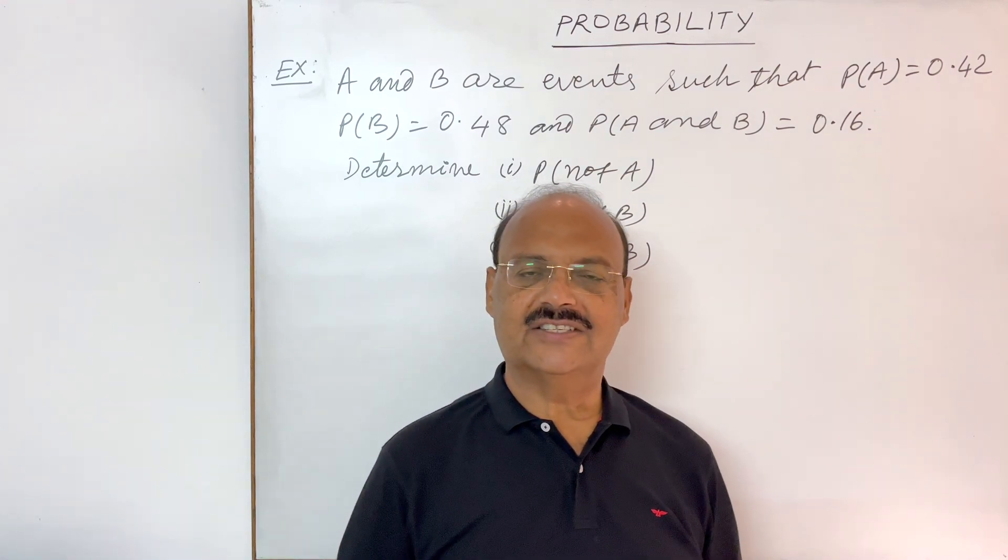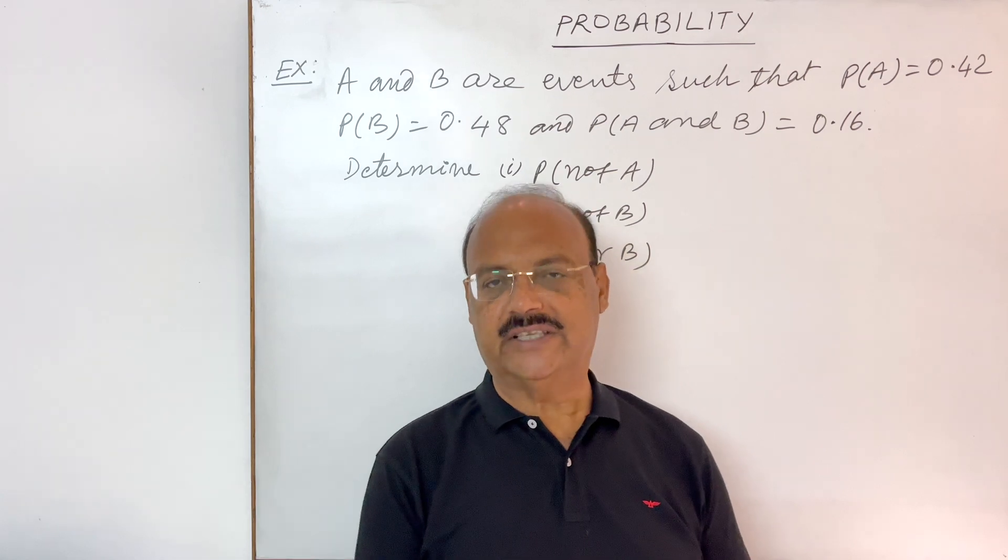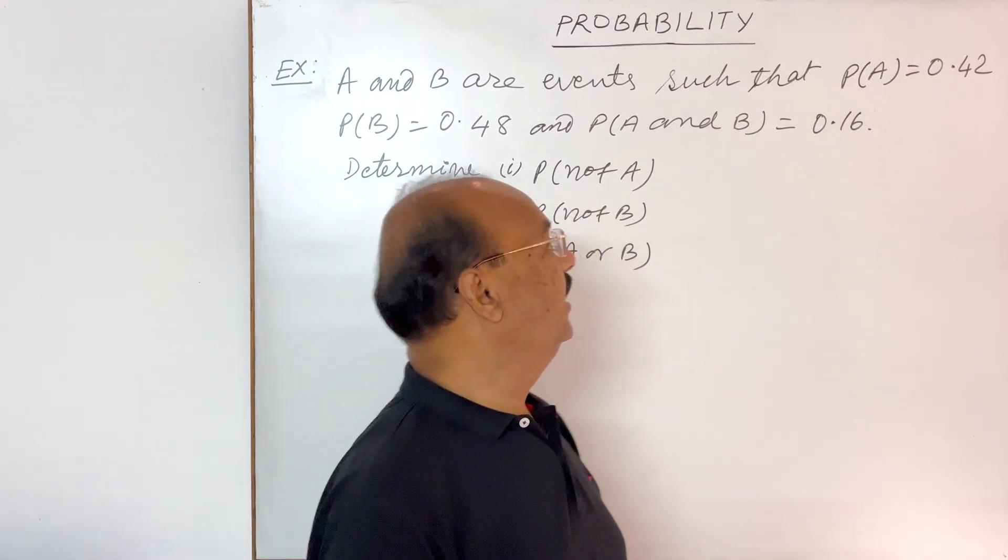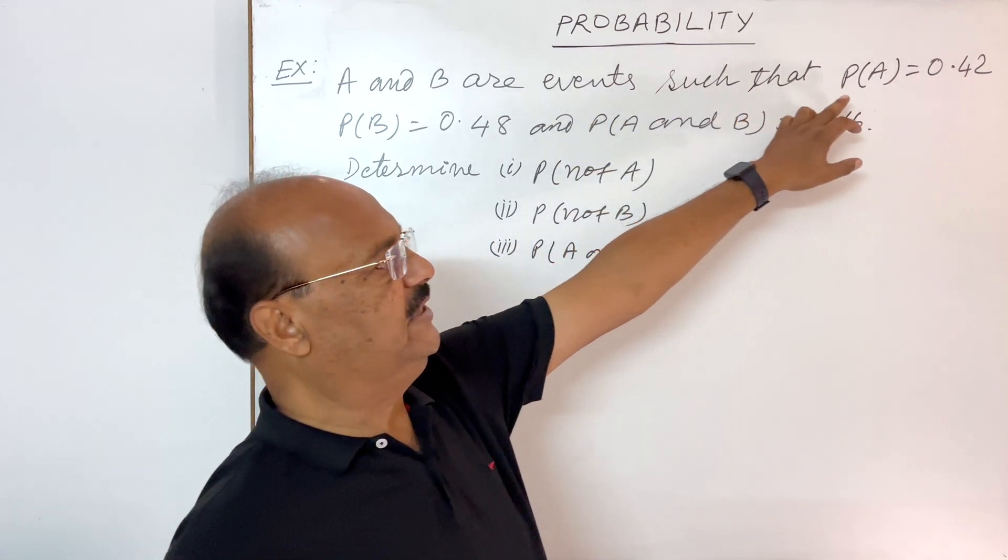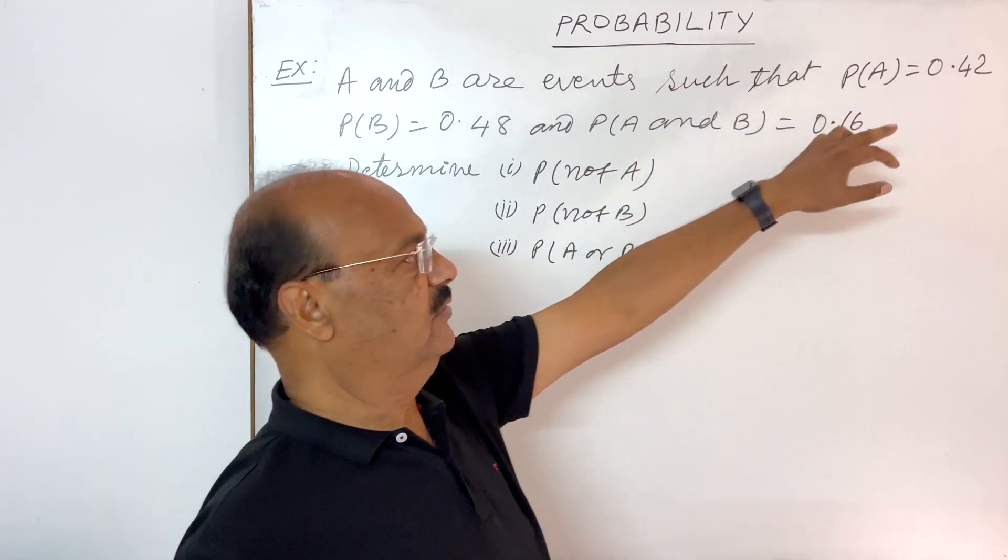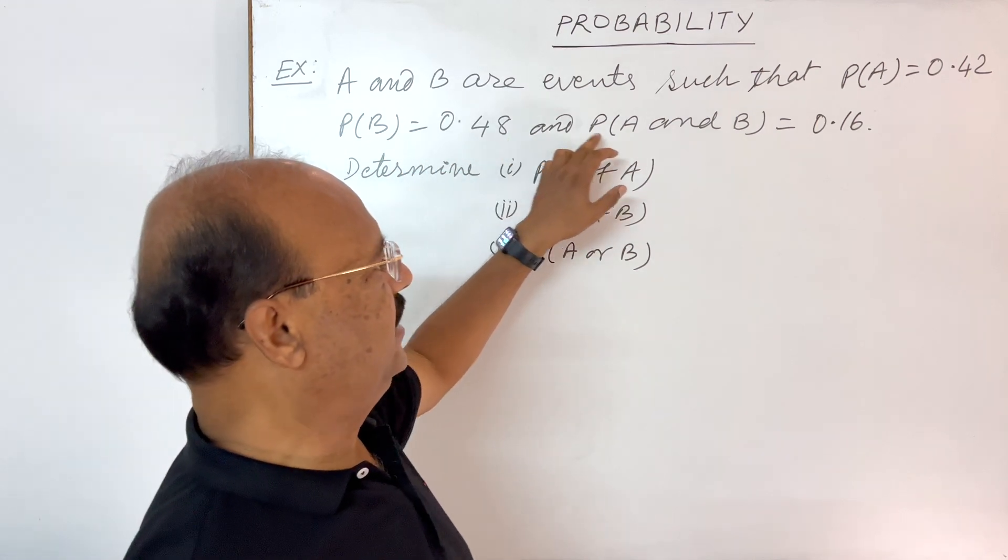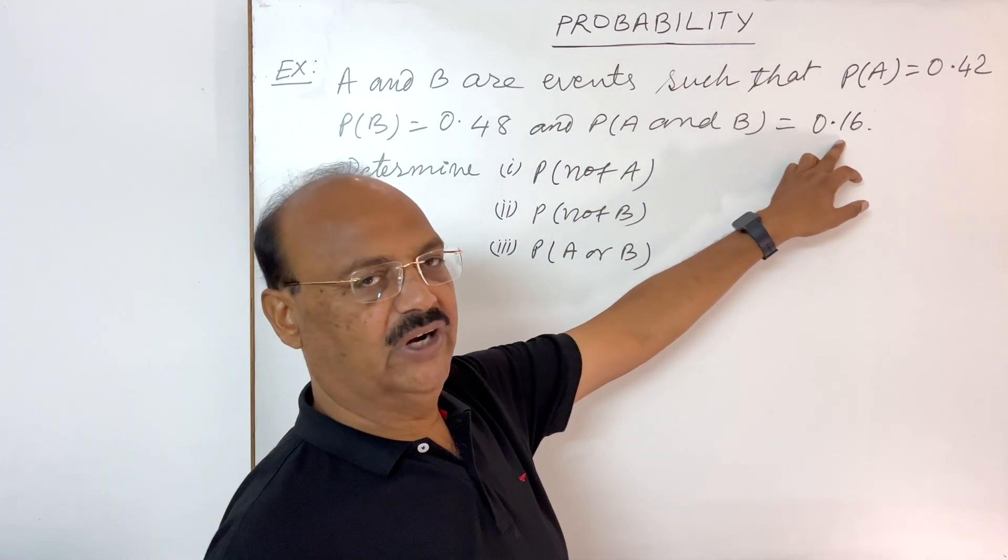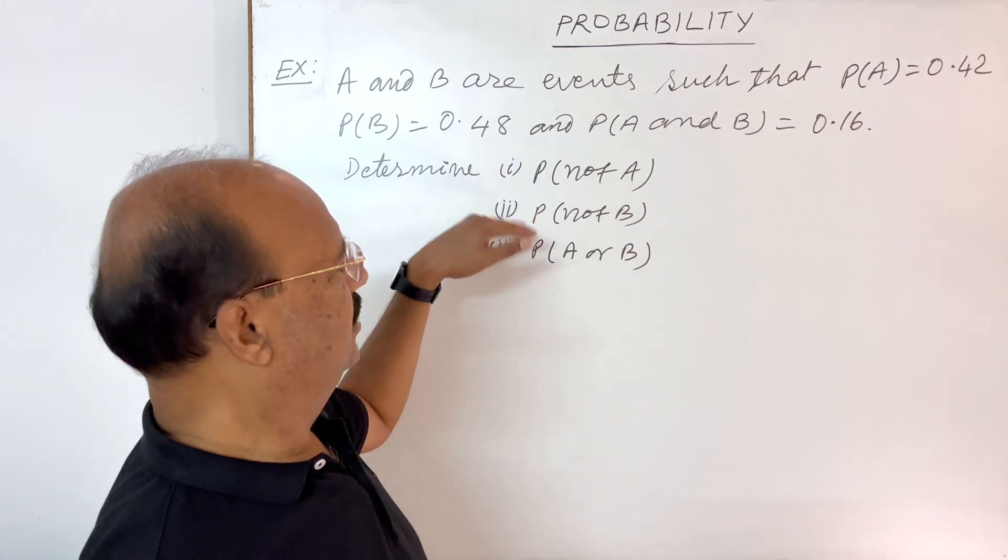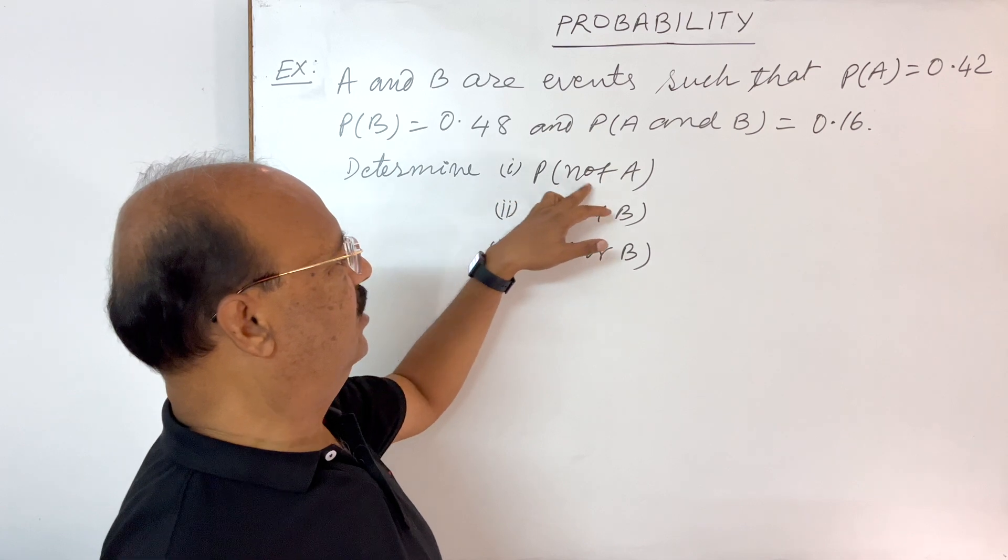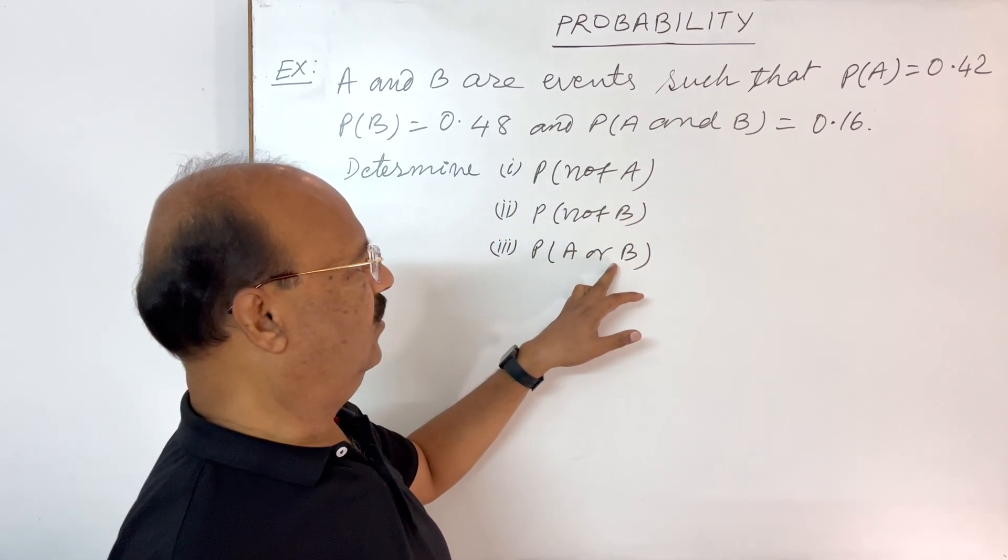Welcome students. Let us see a very interesting question from the chapter probability. Question has been taken from NCERT book of Standard 11. Here question is A and B are events such that probability of A is equal to 0.42, probability of B is 0.48, and probability of A and B is equal to 0.16. We have to determine probability of not A, probability of not B, and probability of A or B.